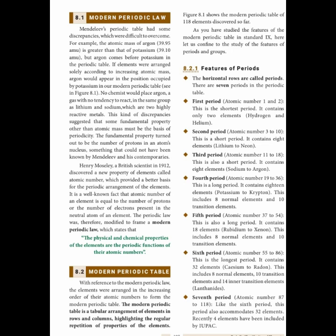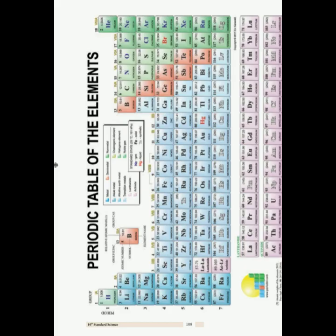Looking at the periodic table: the first period contains hydrogen and helium. The second period is lithium to neon. The third period starts with sodium. The fourth period starts with potassium (K). The fifth period's starting element is rubidium (Rb). The sixth period starts with cesium and the seventh period starts with francium. This is the skeletal arrangement of elements based on Moseley's modern periodic table.